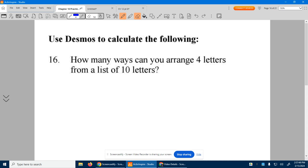All right. So number 16, how many ways can you arrange four letters from a list of 10 letters? So we have these 10 letters, A, B, C, D, E, F, G.